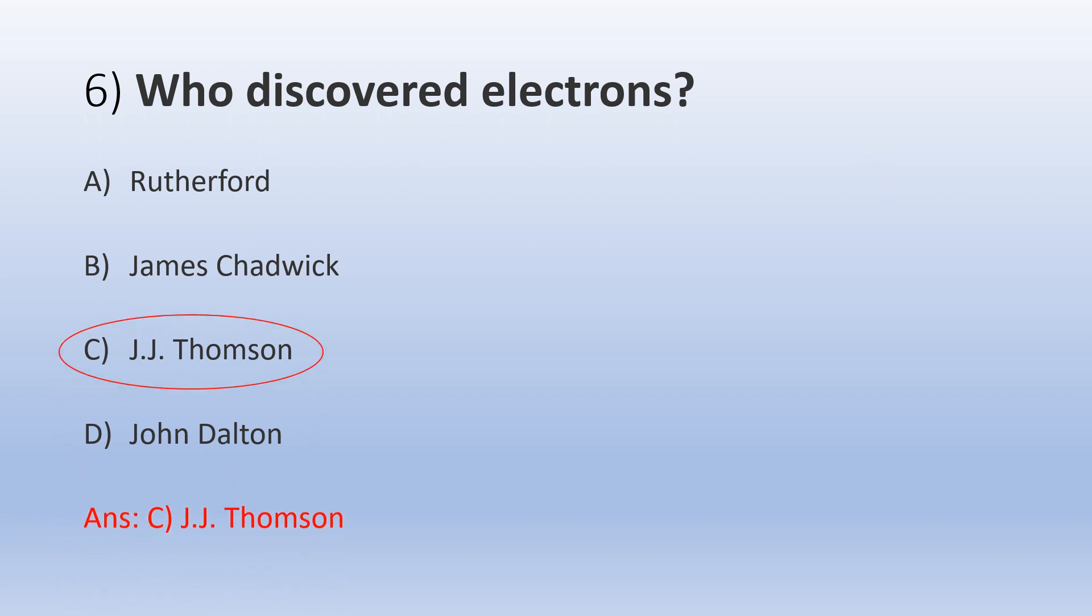The correct answer is C, J.J. Thomson. J.J. Thomson performed several experiments on cathode rays and accidentally electrons were discovered. An atom consists of a central positively charged nucleus and negatively charged electrons revolve around it.